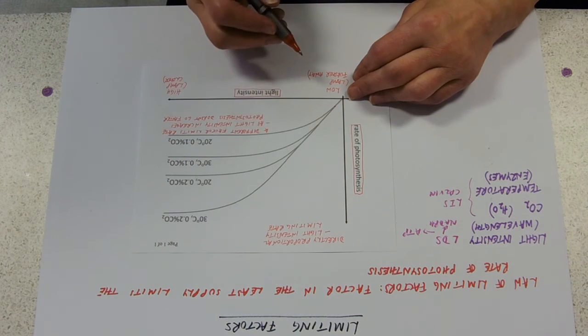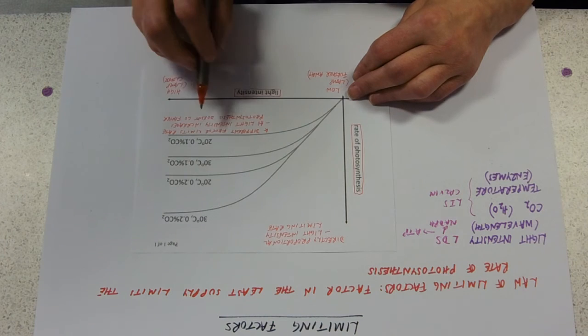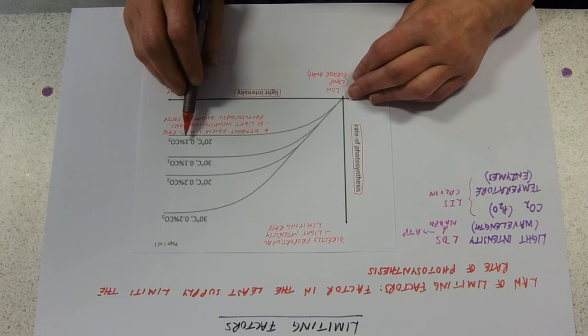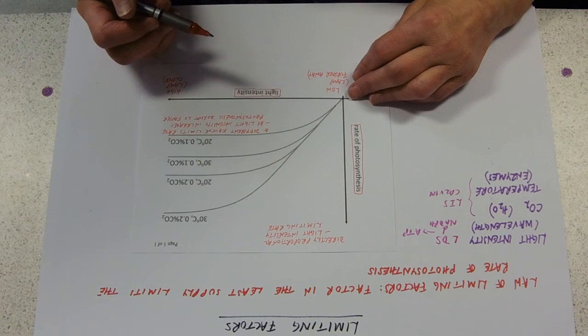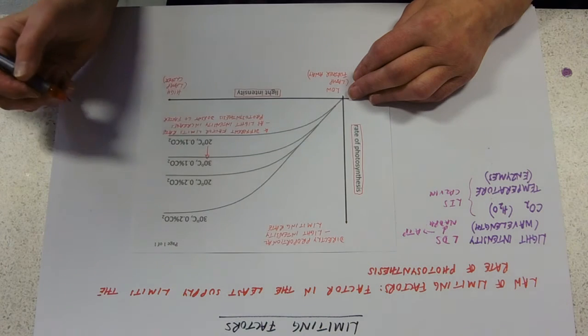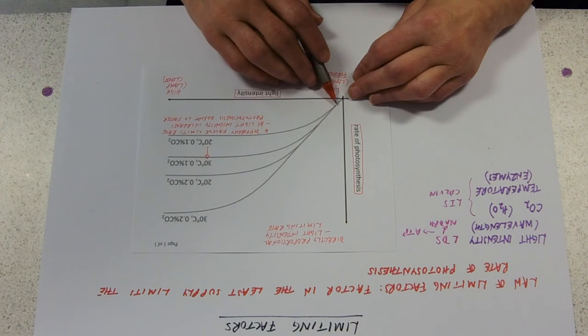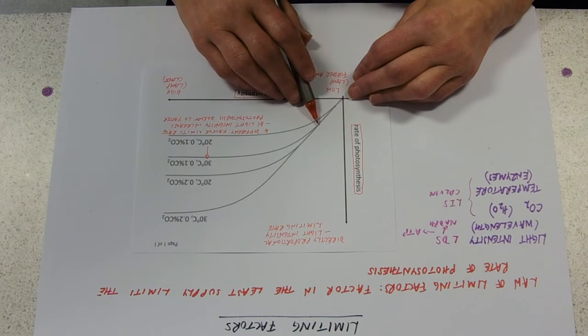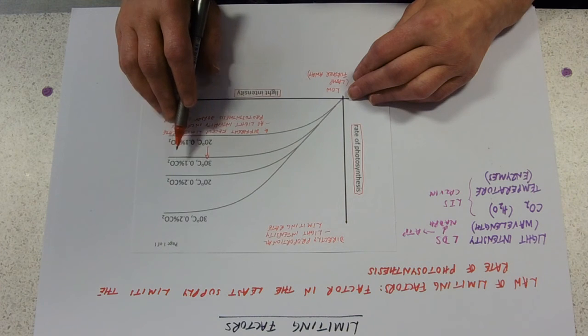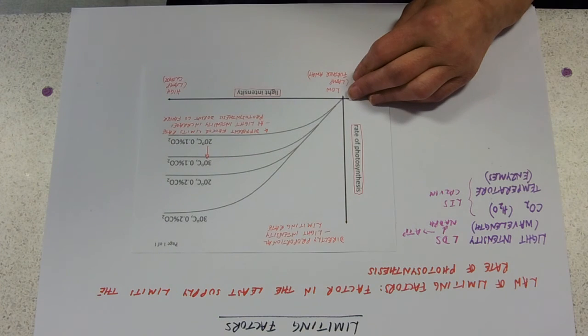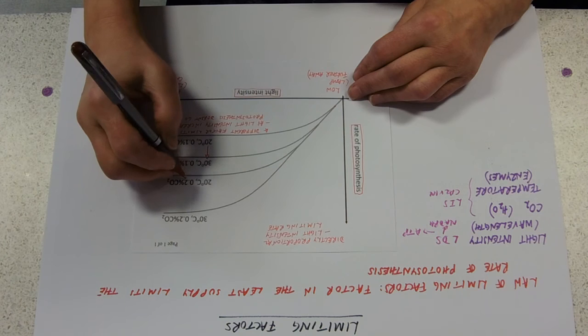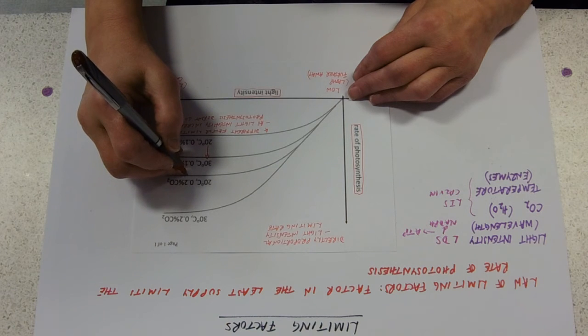Even though the light intensity is getting more and more, our limiting factor then could be the temperature or the carbon dioxide. That means if we increase one of those, the rate will go up. So you can see that if we increase the temperature up to 30 degrees Celsius, the rate of photosynthesis is again limited by light, limited by light, not limited by light - it's going faster just because you've raised the temperature.